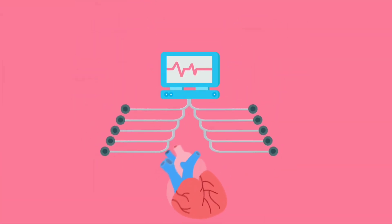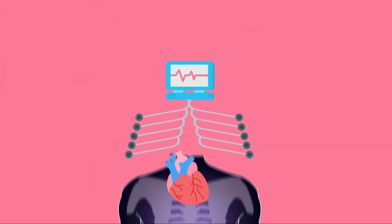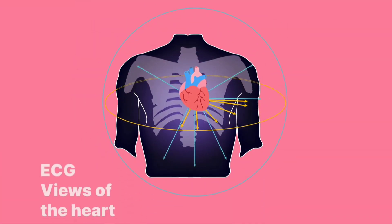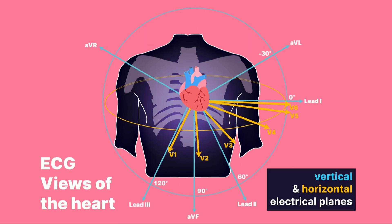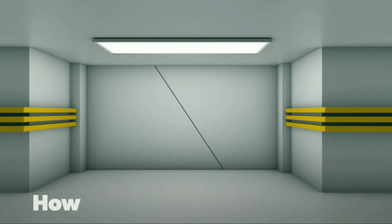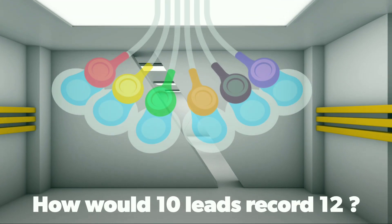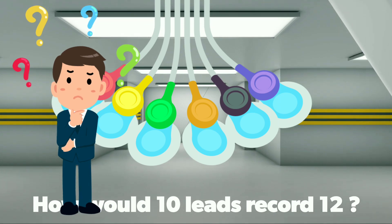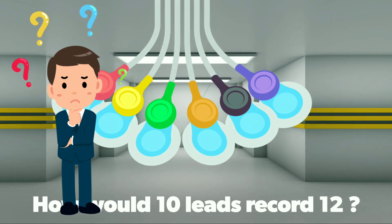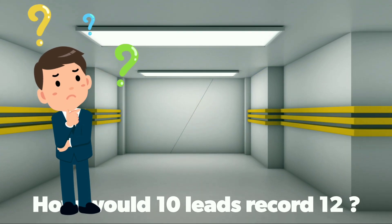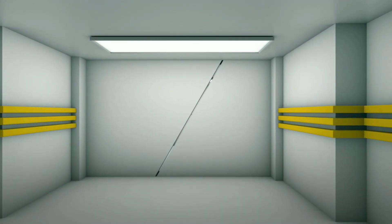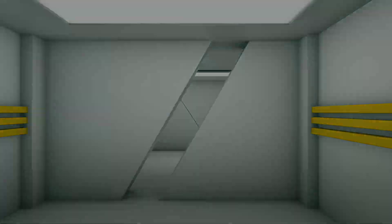So there are actually 10 leads used in a 12-lead ECG — 10 leads provide 12 views of the heart. You must be wondering how 10 leads give a reading of 12. I'll answer that shortly, but for now let's continue with the procedure.